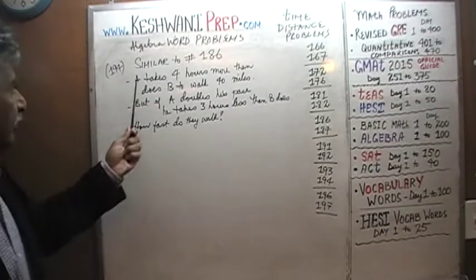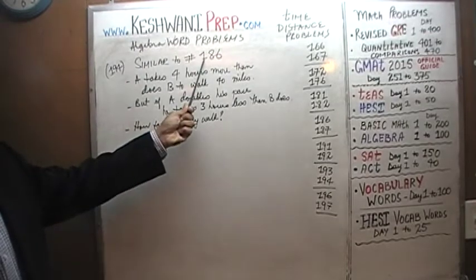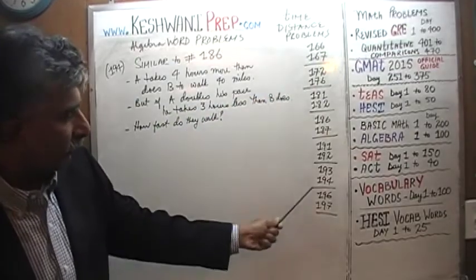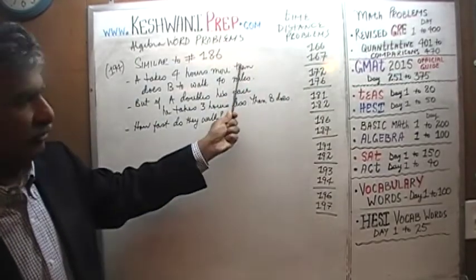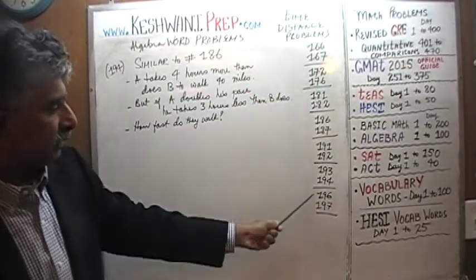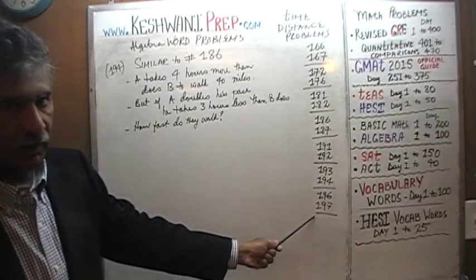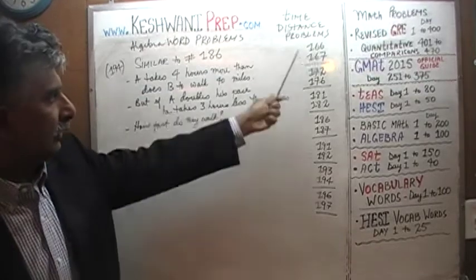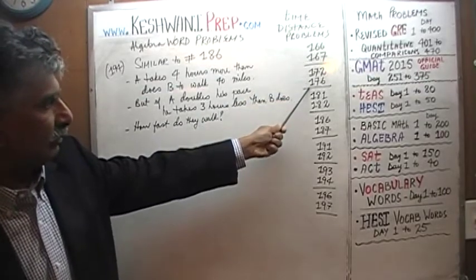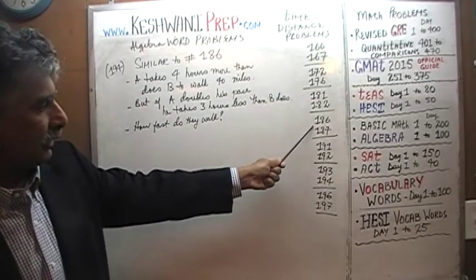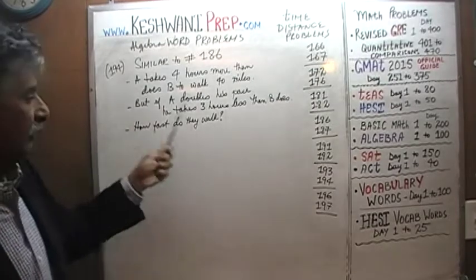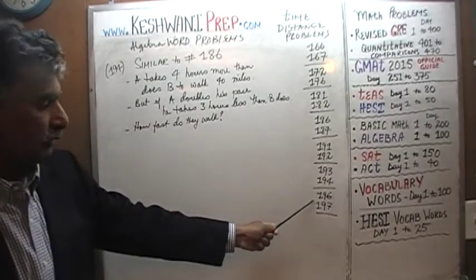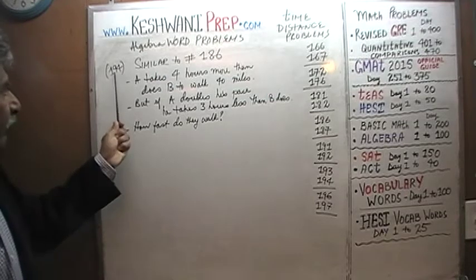This problem is very similar to the one we did before, number 186. Here you see the list of all the problems dealing with the notion of time and distance — this is a time-distance problem. The problems we have done so far include: 166, 167, 172, 176, 181, 182, 186, 187, 191, 192, 193, and 194 is what we are about to do.